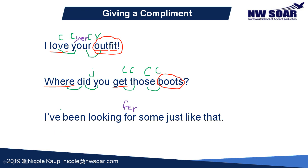Let's take a look at linking. We have a lot of consonant-to-consonant linking in this sentence. Notice the V to the B here — I've been. And then the N to the L is also consonant-to-consonant linking: I've been looking, been looking. Looking for. For some. Some just. Just like. And like that. So each of these has consonant-to-consonant linking, so you will not stop between any of these words — make sure to smoothly connect them all. I've been looking for some just like that. Notice how smooth that was, and I did not break between any of the words. It almost sounded like all of those words were just one word.